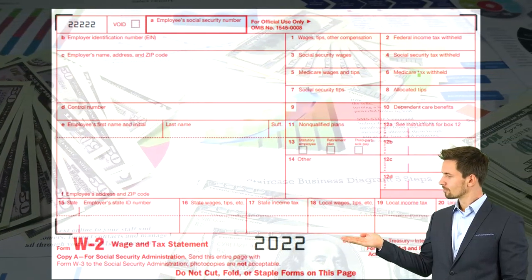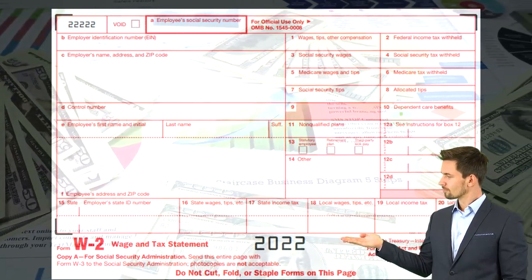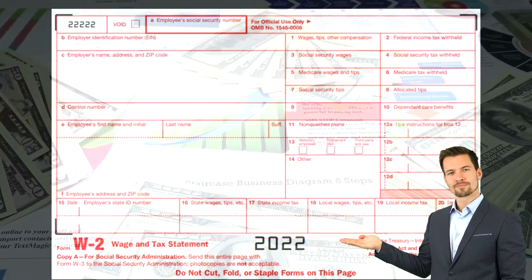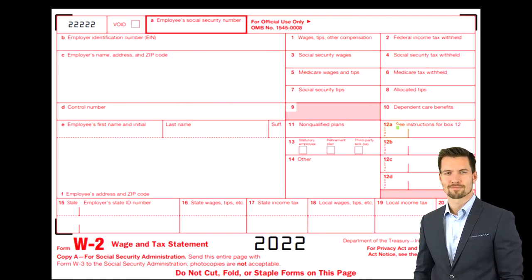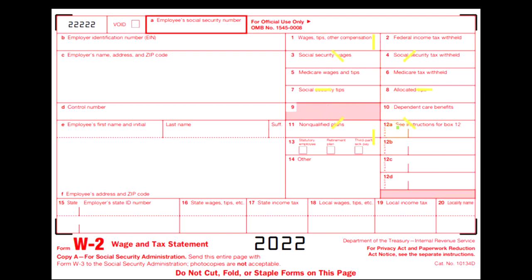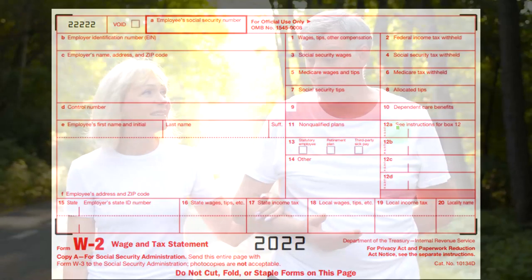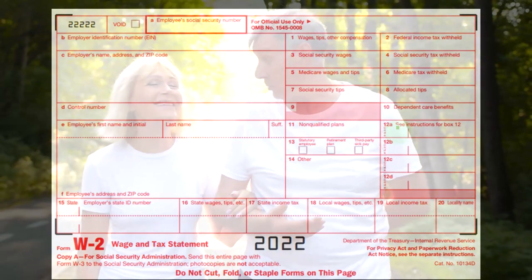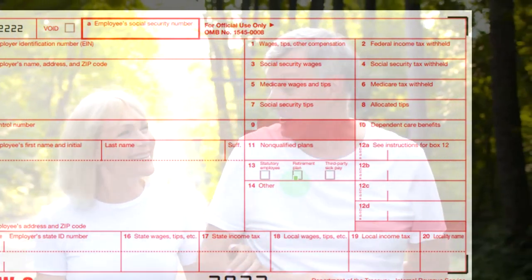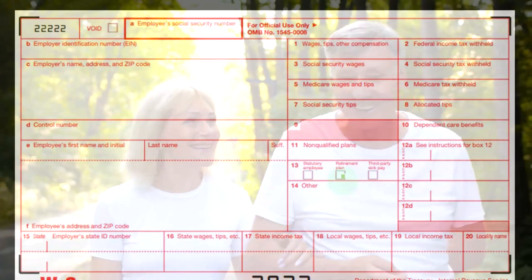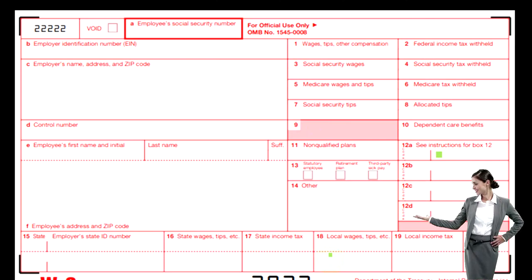Box 12 is another important box that gives more information about what's included — for example, a retirement plan or 401k contribution, which would also be reflected as a reduction in taxable income in box 1. There is also a retirement plan checkbox that would be checked off if applicable, and if checked, you would expect to see something in box 12. On the bottom you have state taxes, similar to boxes 1 and 2 but on the state side.